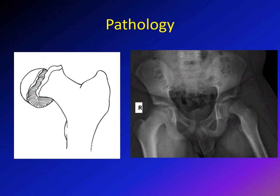This illustration shows the capital epiphysis contained within the acetabulum, with the metaphysis starting to displace in relation to that epiphysis. This is what's called slipped capital femoral epiphysis.